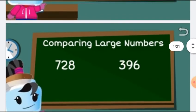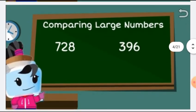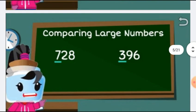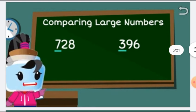So we have our first question: comparing large numbers. The first number is 728 and the second number is 396. First we will compare the hundreds place. In the first number, at the hundreds place is 7, and in the second number at the hundreds place is 3.